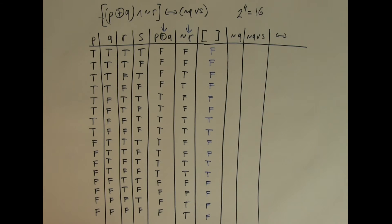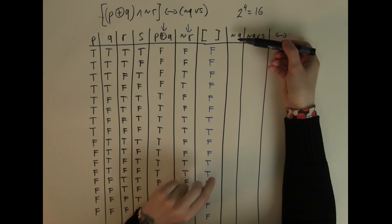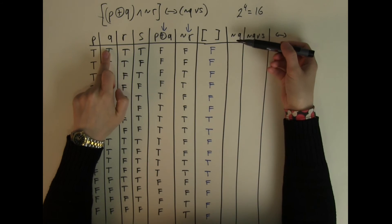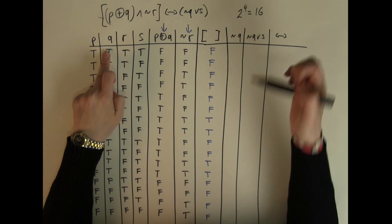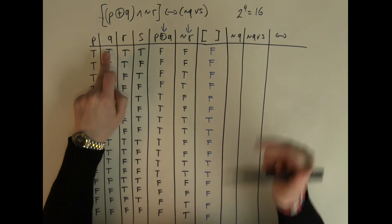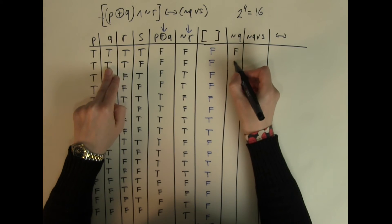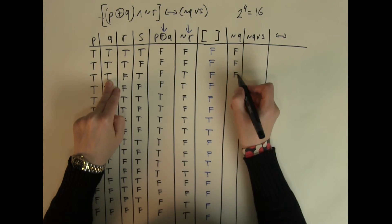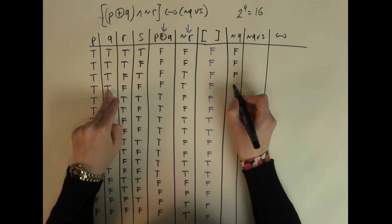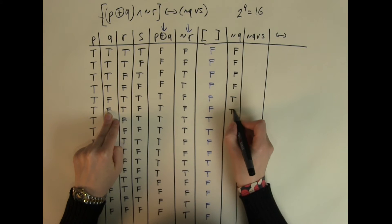Then I calculate NOT Q. Q is in its column, and NOT Q is just the opposite of the Q column — true becomes false and false becomes true.